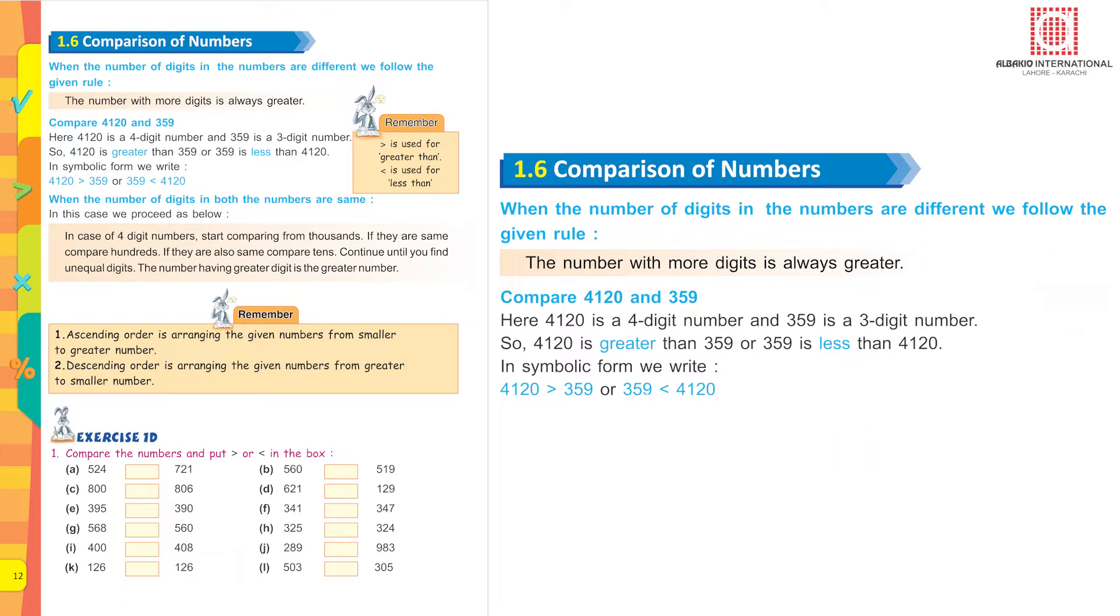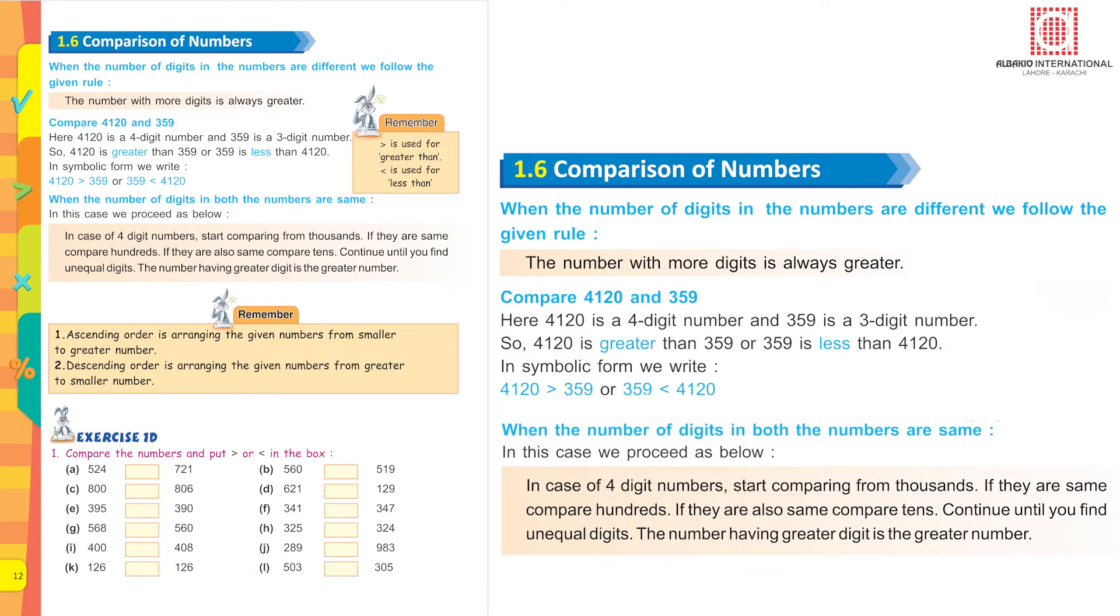So 4120 is greater than 359, or 359 is lesser than 4120. In symbolic form we write: 4120 is greater than 359, or 359 is lesser than 4120.